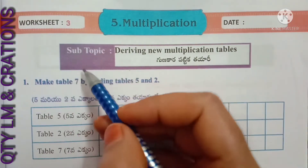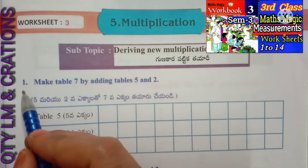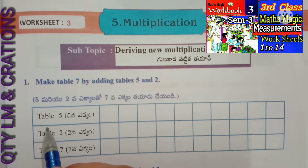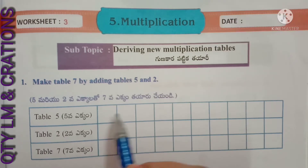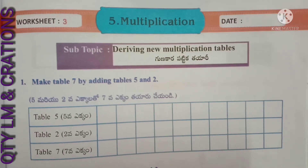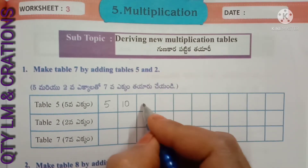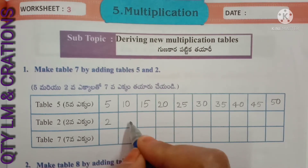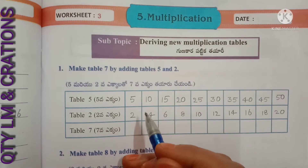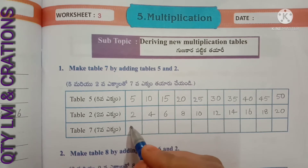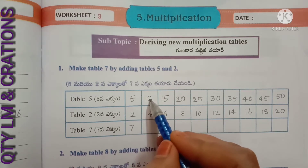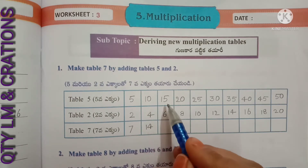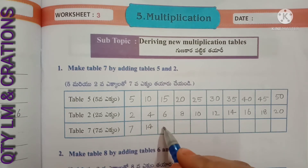Next, worksheet number 3, subtopic: deriving new multiplication tables. First question: make table 7 by adding table 5 and table 2. We write table 5: five ones are five, five twos are ten, five threes are fifteen. And table 2: two ones are two, two twos are four, two threes are six. Adding: five ones plus two ones gives seven ones. Next, five twos plus two twos gives fourteen. Five threes plus two threes gives twenty-one. Five fours plus two fours gives twenty-eight. Five fives plus two fives gives thirty-five. Five sixes plus two sixes gives forty-two.